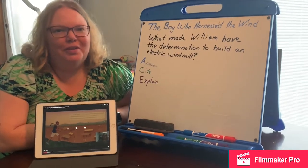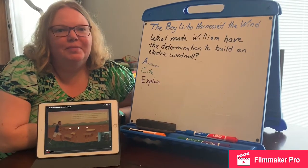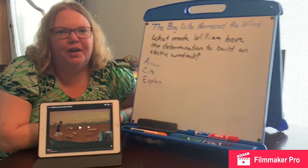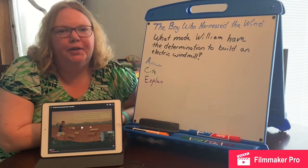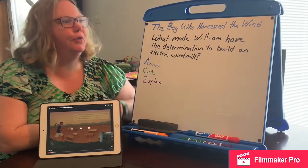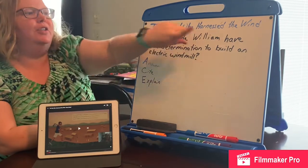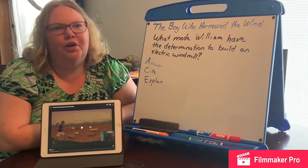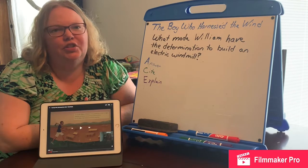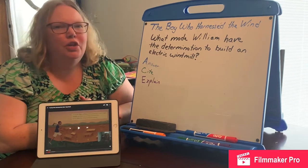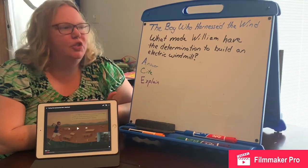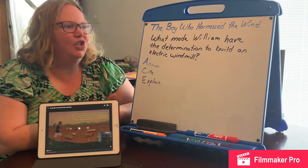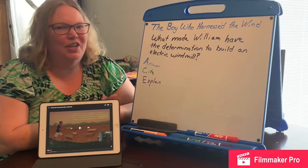Good afternoon fourth graders. Today we're going to look at making an inference from our book, The Boy Who Harnessed the Wind. Yesterday in your online activity sheet you were supposed to ponder a question: what made William have the determination to build an electric windmill?